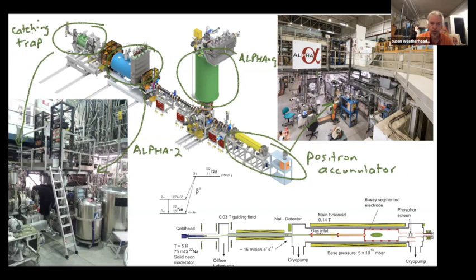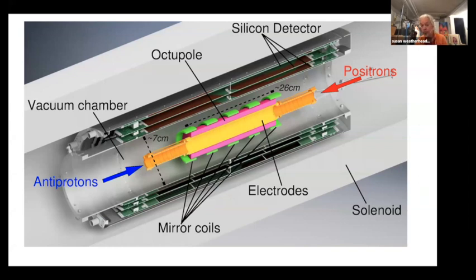What I want to first talk about is the catching trap and alpha-2. Here's alpha-2 basically, although we've since added a bunch of stuff there. The antiprotons come in to the left, the positrons to the right. You get the scale here. The vacuum tube in the middle is about four and a half centimeters in diameter. We have electrodes around that, magnets around that, and then around that we have a silicon detector, which is why I joined the experiment, why they asked me to, because that's what I worked on in Aleph.